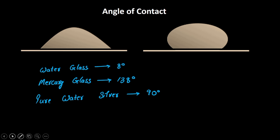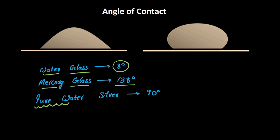Let's look at the angle of contact for some important interfaces. For the water and glass interface, the angle is 8 degrees — an acute angle, as we just studied. For mercury and glass, it is an obtuse angle of 138 degrees. An interesting case is pure water and silver, where the angle of contact comes out to be exactly 90 degrees.